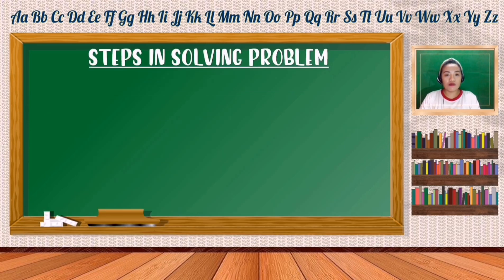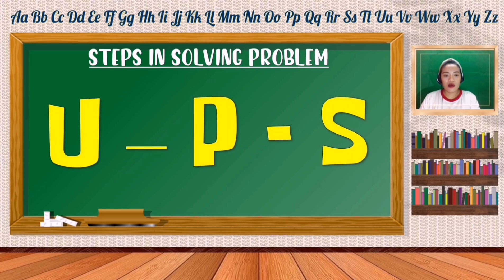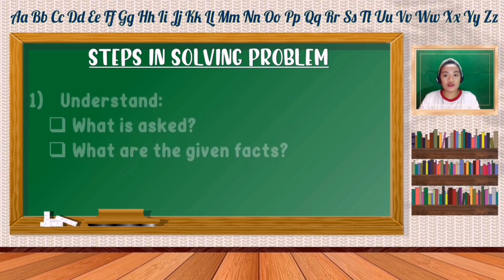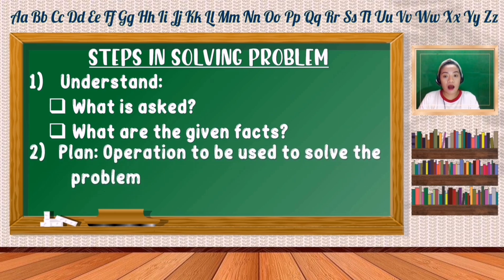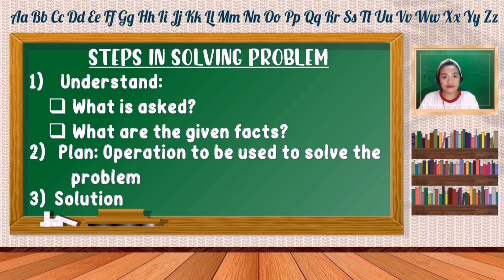Here are the steps in solving a problem. We will use UPS. U stands for Understand — we need to know what is being asked in the problem and what are the given facts, which are the numbers or fractions needed to solve it. P stands for Plan — we need to know the operation to be used. And S stands for Solution. Now, let us proceed to examples.